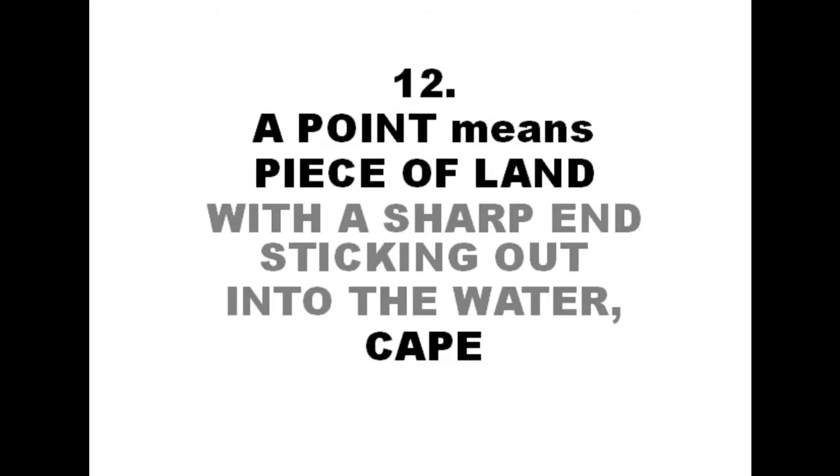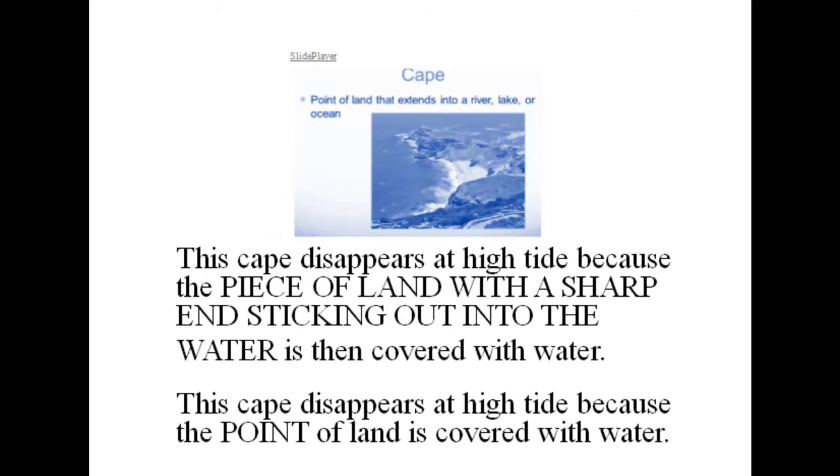A point means piece of land with a sharp end sticking out into the water. Cape. This cape disappears at high tide because the piece of land with a sharp end sticking out into the water is then covered with water.